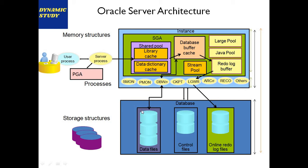PMON (Process Monitor) is a log holder process that manages locking. When we update data without committing, that data won't be visible to other users because it is locked. Once we commit, the data is physically written to the data files and all users can see it. These locking mechanisms are managed by PMON.